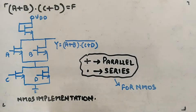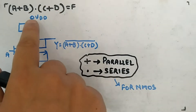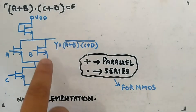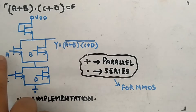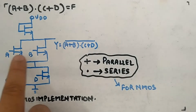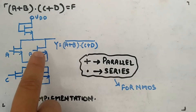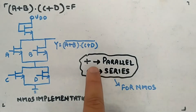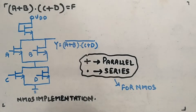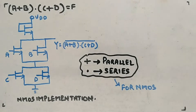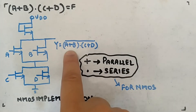In PMOS it will be reverse, but I will tell you later. Here you can see I have made the active load — this is made of NMOS, VDD and ground are there. Below y, I have made this arrangement: a + b means a parallel with b. Then you have dot, which means series. Then c + d means c parallel with d. That's how you make it, and on the top you just have to make the active load.